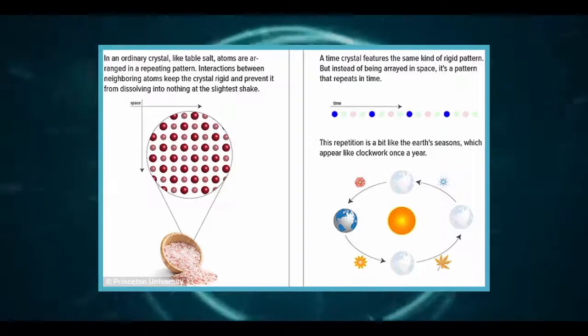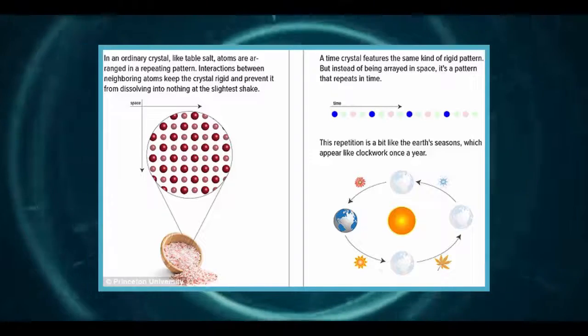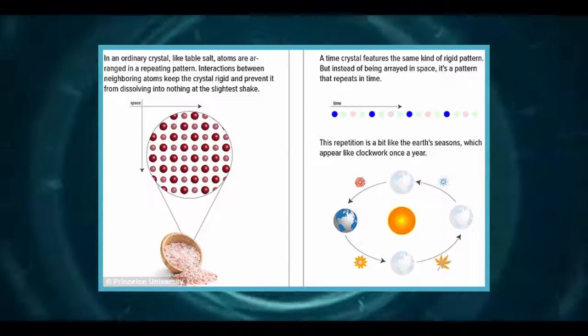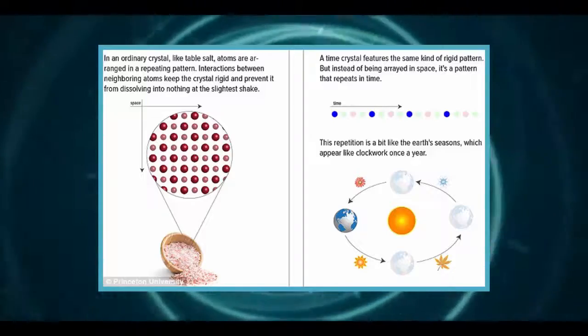While the atoms that make up crystals such as ice or diamond are arranged in a repeating pattern through space, the pattern behind time crystals repeats in time.